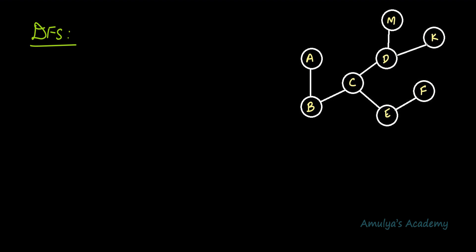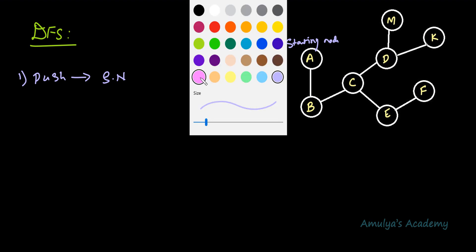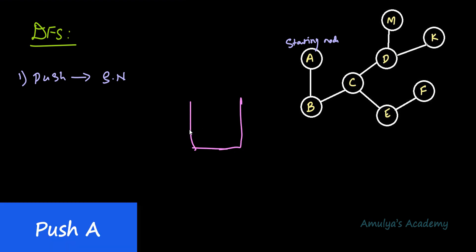Today we will see how and why stack data structures are used to implement DFS. First, we need to choose the starting node — here I will choose A as the starting node. After choosing the starting node, I need to push it onto the stack. Stack follows last-in first-out rule; push means inserting an element, pop means removing an element. So I push A onto the stack.